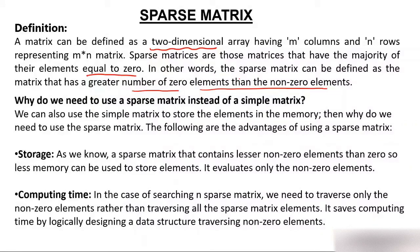Why do we need to use a sparse matrix instead of a simple matrix? There are basically two advantages: storage and computing. Since a sparse matrix has a maximum number of zero elements, storing zeros wastes memory. So in the sparse matrix, we store only non-zero elements, which uses less memory. And for computing time, since we only access non-zero elements, computing time will also be less. These are the two major factors of sparse matrix.